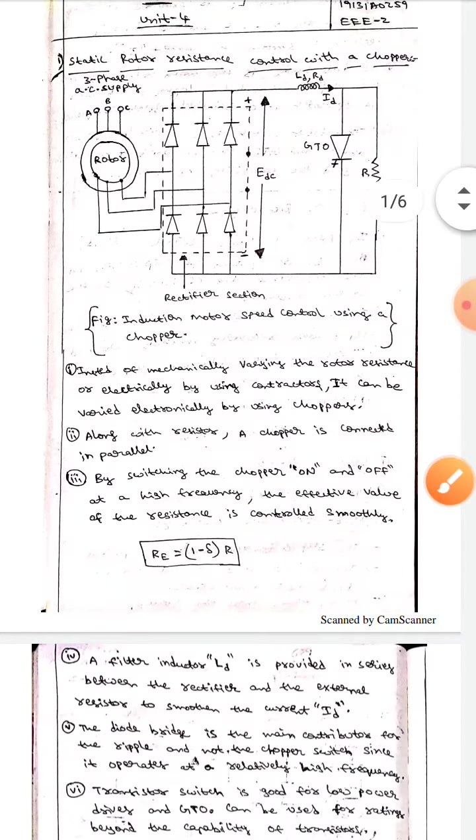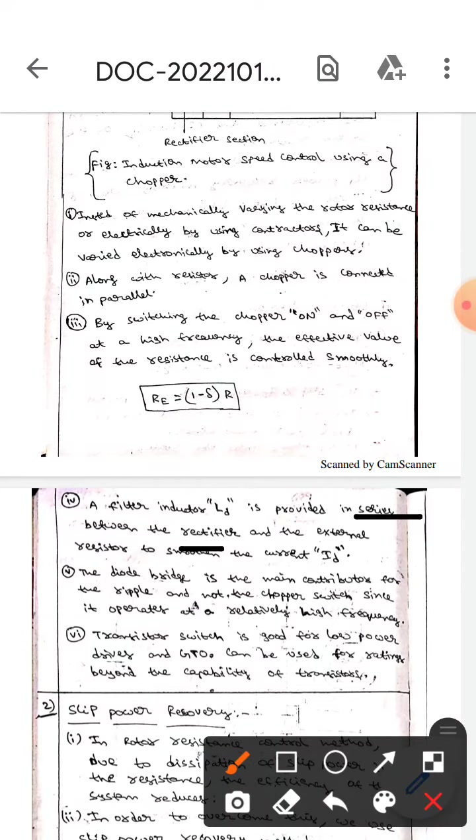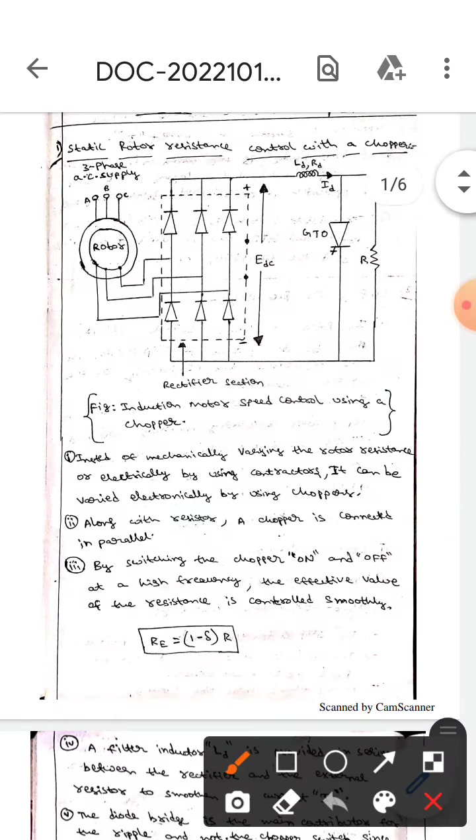Here it is plotted in series between the rectifier and external resistor in order to smoothen the current ID. In order to smoothen the current ID, the filter inductor LD is placed. If you observe here, this is the LD inductor.